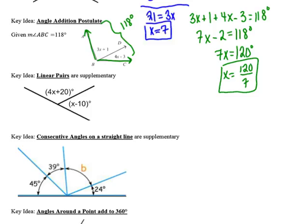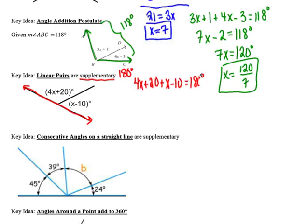The next key idea is that linear pairs of angles are always supplementary. Linear pairs are adjacent angles on the same straight line. Because they form a straight line, they sum to 180 degrees. So for this third example, the equation is 4x plus 20 plus x minus 10 equals 180 degrees.